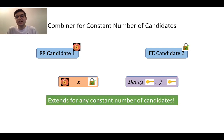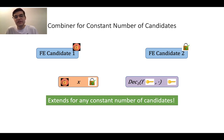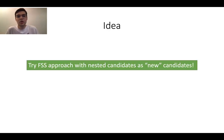However, we cannot nest n candidates in a row because the running times of these candidates grow exponentially with the number of combined candidates, violating the efficiency requirement. But for a constant number, this is not an issue. This gives us the following idea: what if we take our original FE candidates and create nested candidates, treating them as new candidates in our construction? With three FE candidates, we keep the original three and also include all possible two-nestings: FE1 and FE2 nested, FE1 and FE3 nested, and FE2 and FE3 nested.